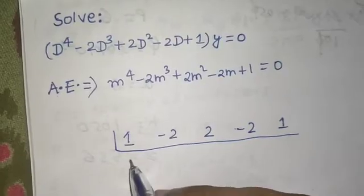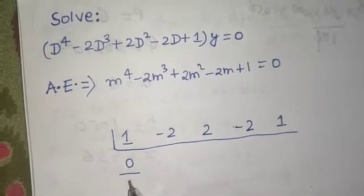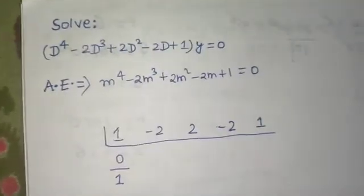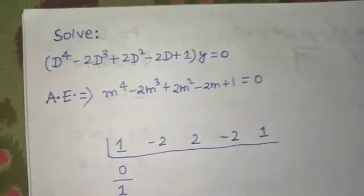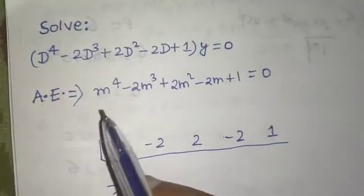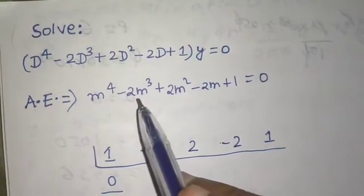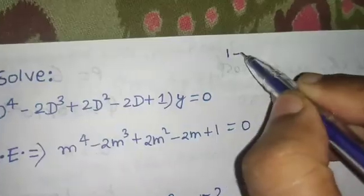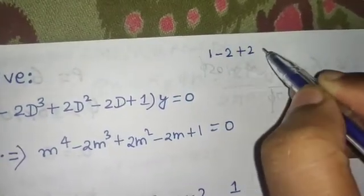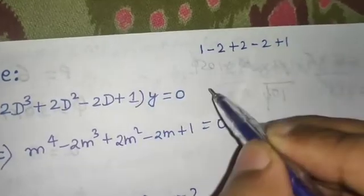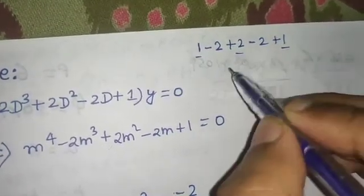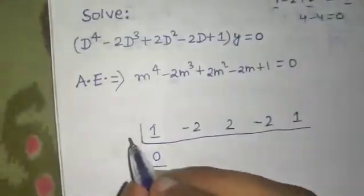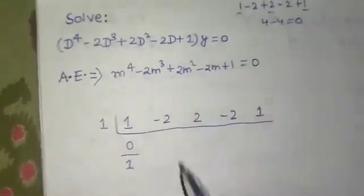We find the first root by hit and trial. Let's check whether one is a root: one minus two plus two minus two plus one equals zero — yes, one is a root. Write one here. The first step is: write the coefficients, write zero below the first term, and add to get one.